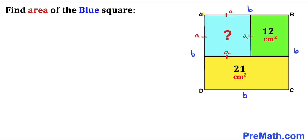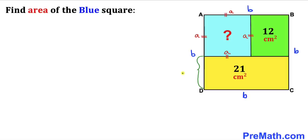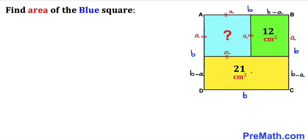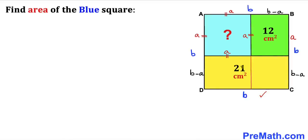Now let's focus on this side length which is 'a'. Since this whole side length is 'b', this side length has got to be b minus a. And likewise, this length is going to be b minus a as well. And now we know that this side length is 'a', then this side length has got to be 'a' as well. Let me go ahead and manipulate this figure by just extending this straight line all the way over here. And we can see that this yellow rectangle has been divided into two rectangles. Since this side length is b minus a, this has got to be b minus a as well.